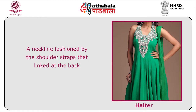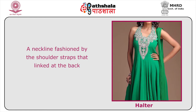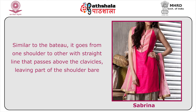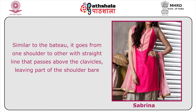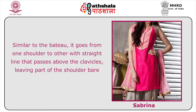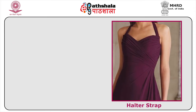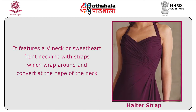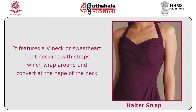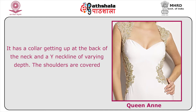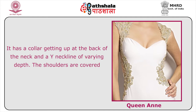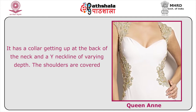The halter neckline is fashioned by shoulder straps that link at the back. The Sabrina is similar to the bateau, going from one shoulder to the other in a straight line above the clavicles, leaving part of the shoulder bare. The halter strap features a V-neck or sweetheart neckline with straps that wrap around and converge at the nape of the neck. The Queen Anne has a collar rising at the back of the neck and a Y-neckline of varying depth, with the shoulders covered.